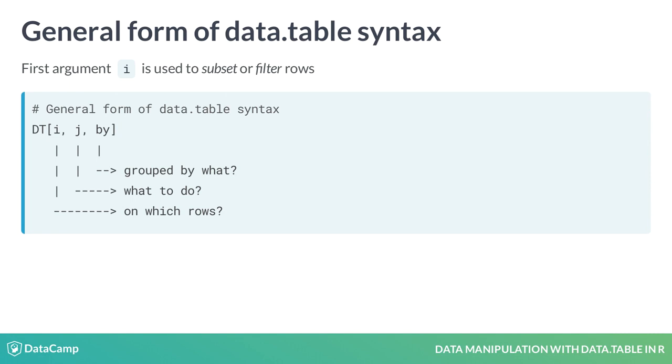The general form of a data table is dt[i, j, by]. It is read out loud as take dt, filter rows in i, then compute j grouped by by. We will look at the first argument i here. The functionality is similar to data frames but more convenient and enhanced.